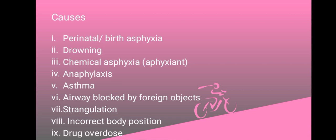The main causes of asphyxiation include the closure of the air passages by external pressure on the neck — as in the case of hanging and strangulation — as well as closure of the external respiratory airways, like in the case of smothering, which prevents the entry of air.